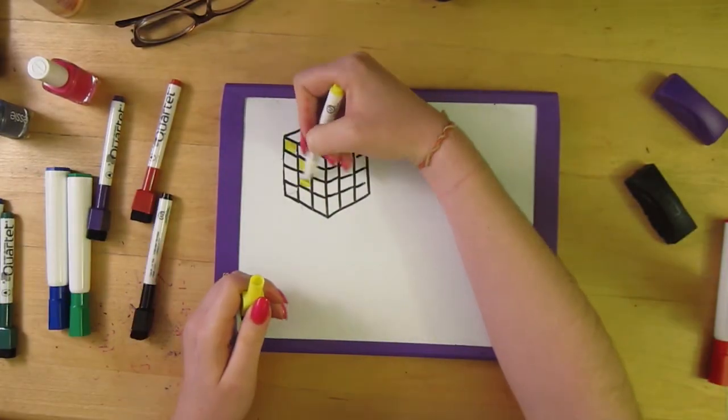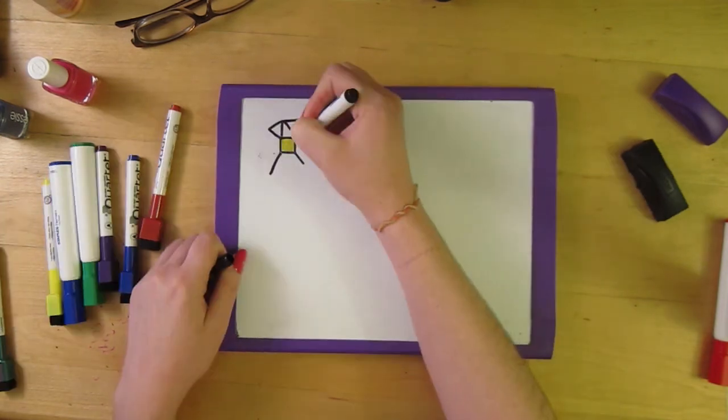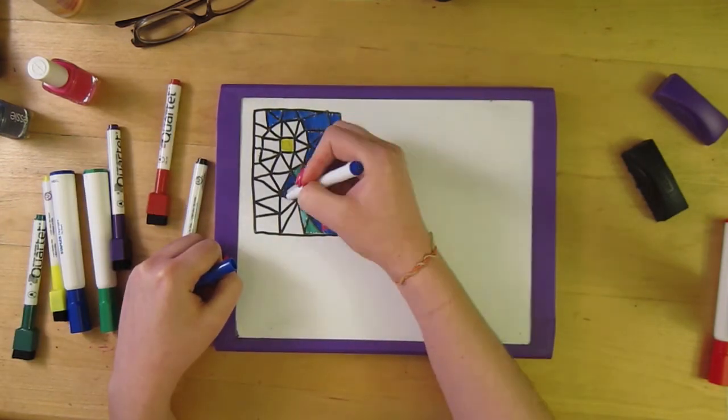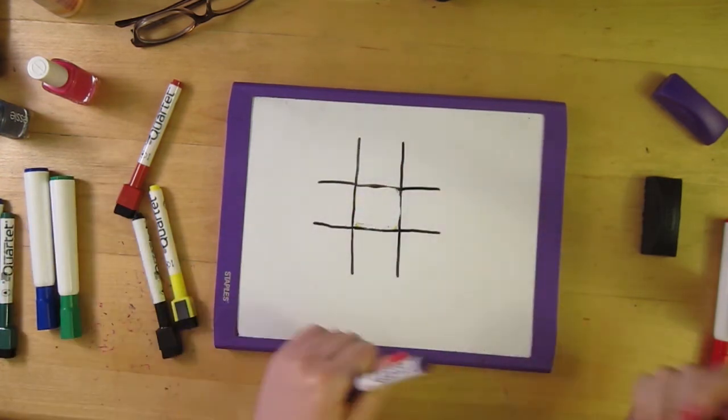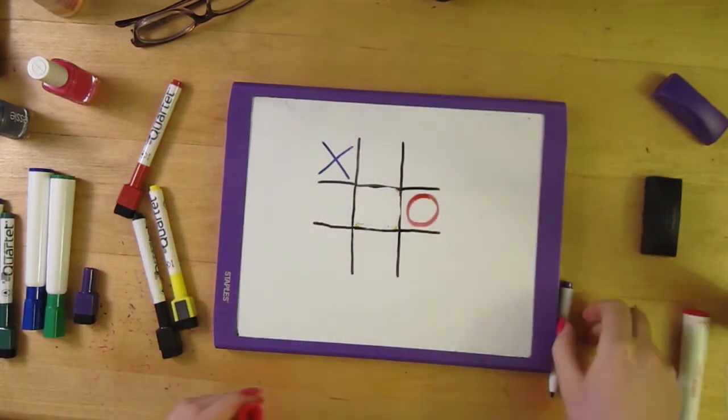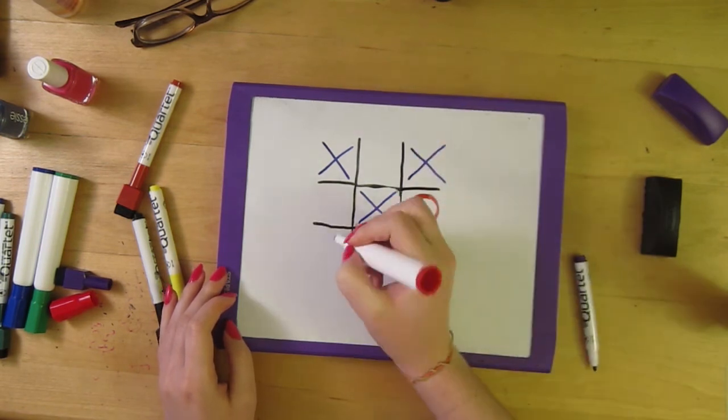Kind of like the blocks that make up a world in Minecraft, or the tiles in a mosaic, or even a game of tic-tac-toe. The X's and O's tell the players who makes a mark on each square.